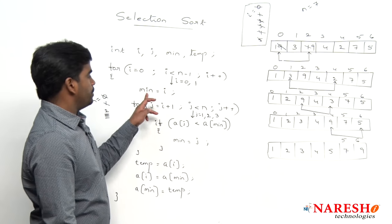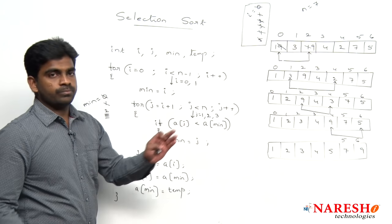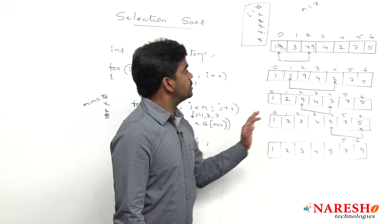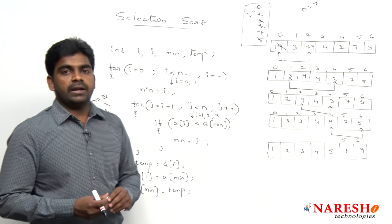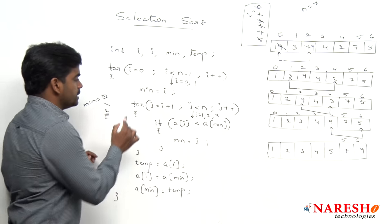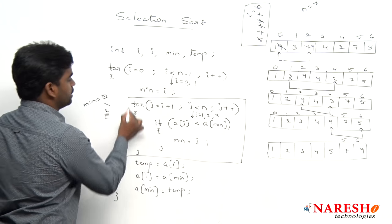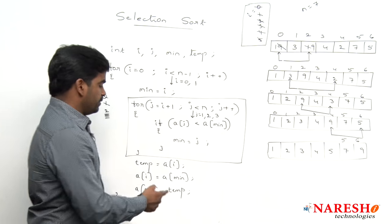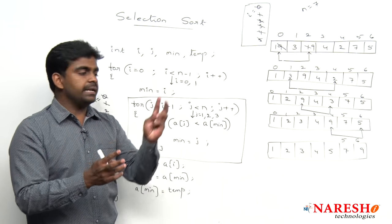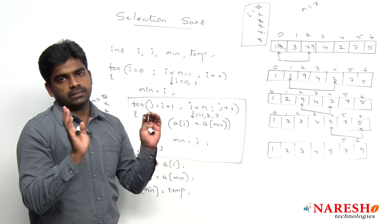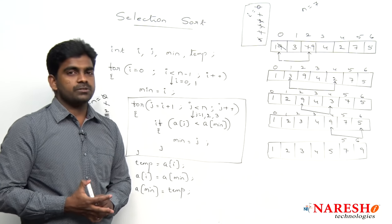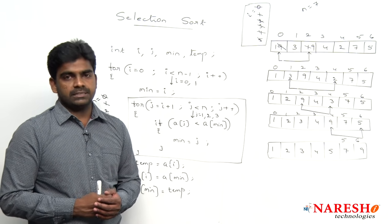Then i value becomes 1 — same story again. Min starts at 1 and j starts at 2, because the first element is already sorted. This is how selection sort executes and all elements get sorted. The inner for loop finds the minimum element index, and then we swap the index element with the minimum location element. For more videos, please subscribe to the channel. Thank you.